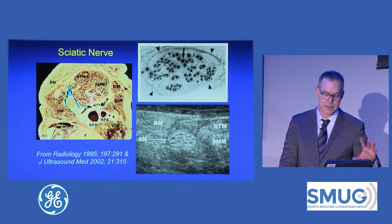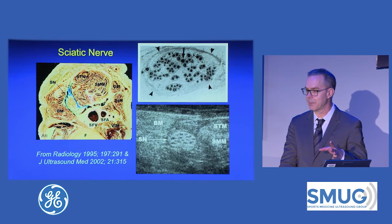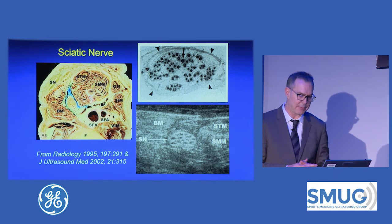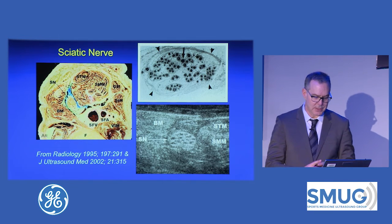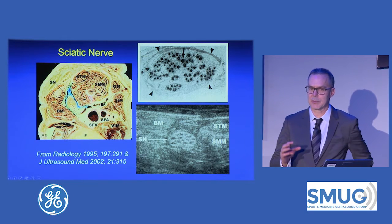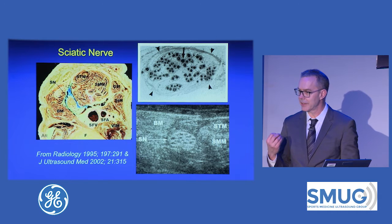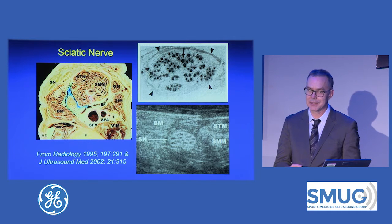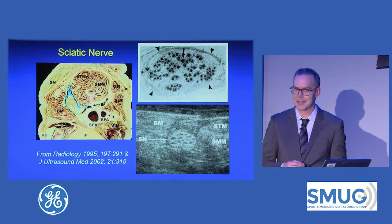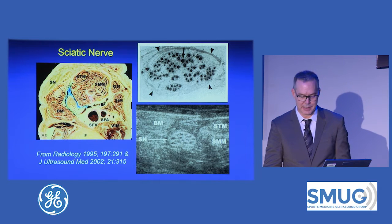I'll be talking primarily about entrapment. If there's time at the end, I'll throw in a couple of nerve sheath tumors because I didn't know where to put them — this is really more an entrapment talk. Here's an example of the sciatic nerve. When we're looking at peripheral nerves, the short axis is where we're going to focus.